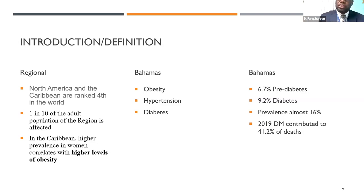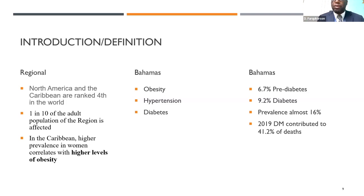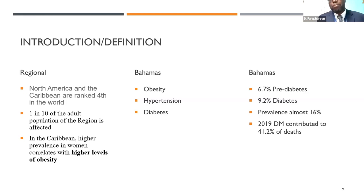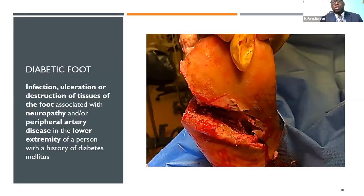About 6.7 percent of our adults are pre-diabetic and about 9.2 percent have actual diabetes, so the prevalence amounts to about 16 percent. In 2019, diabetes contributed to 41 percent of the deaths recorded in our country.